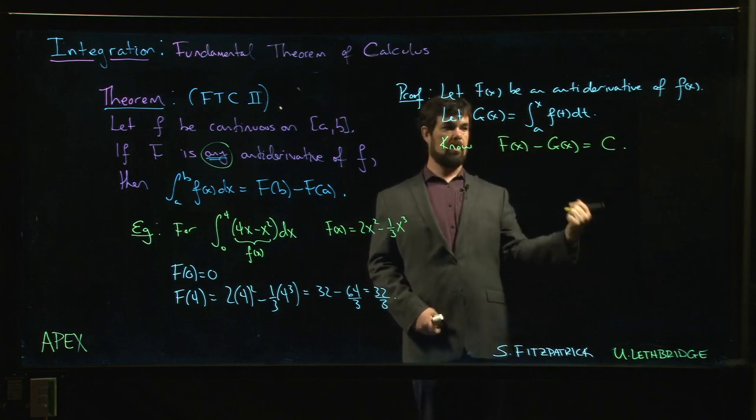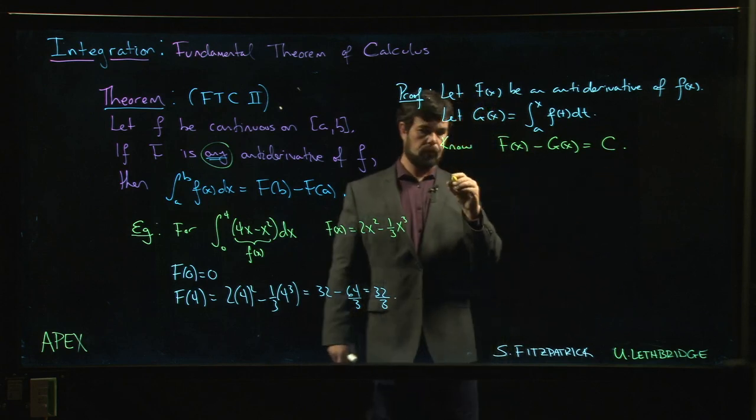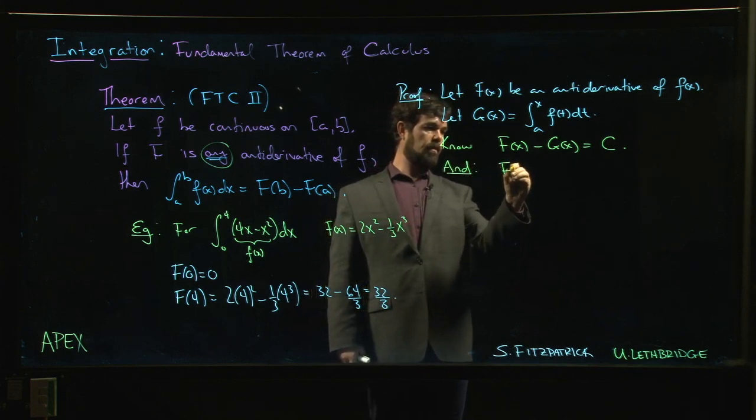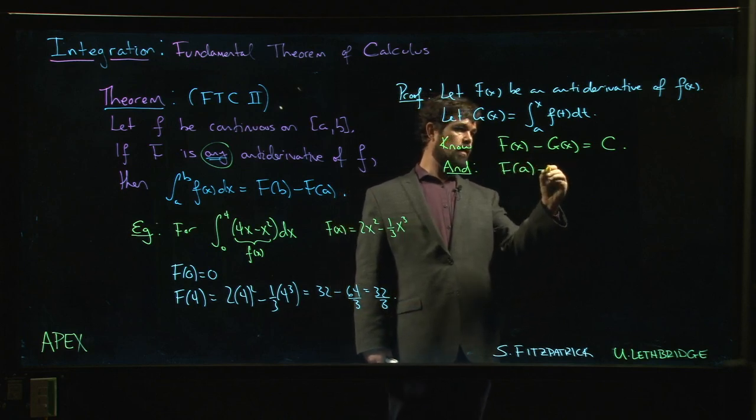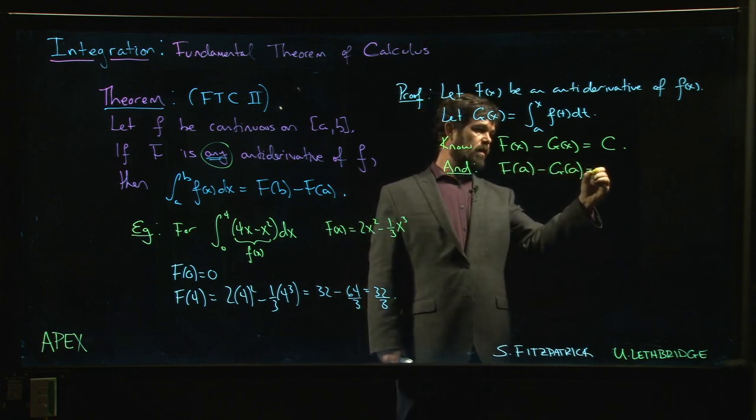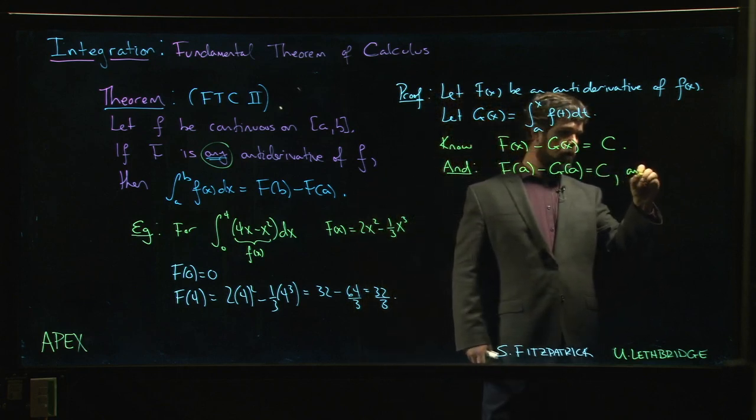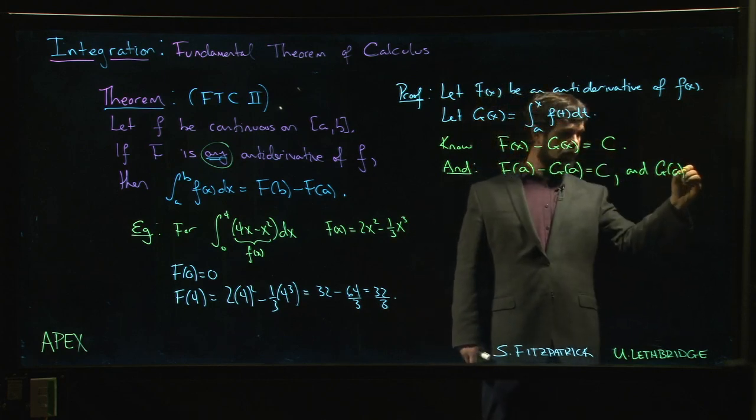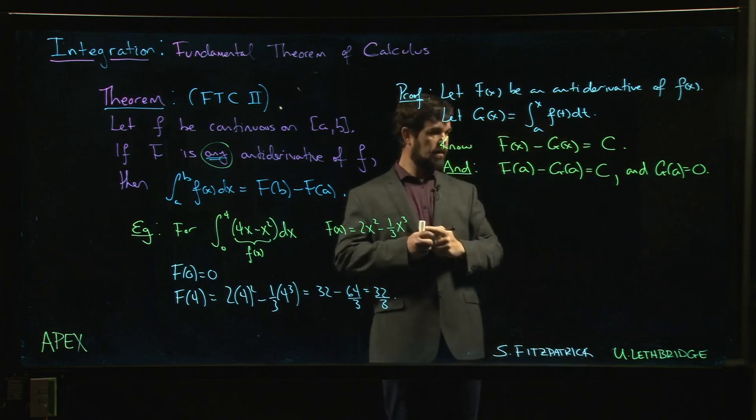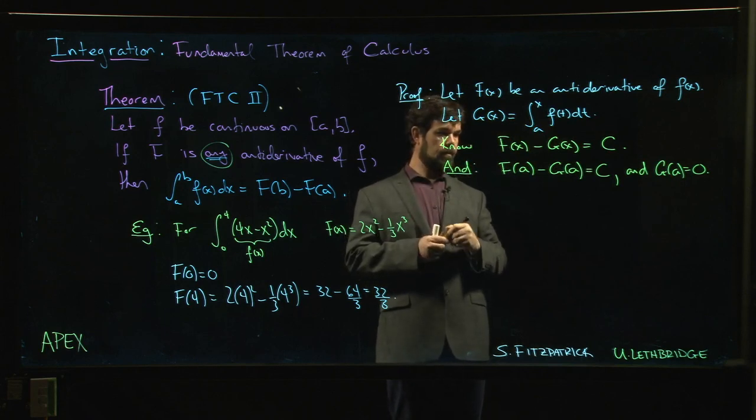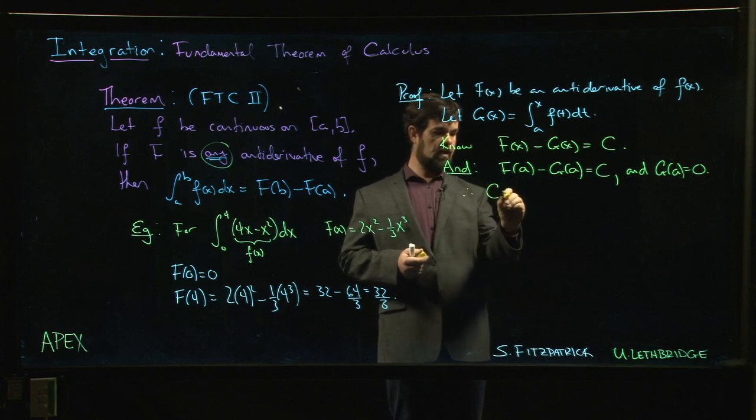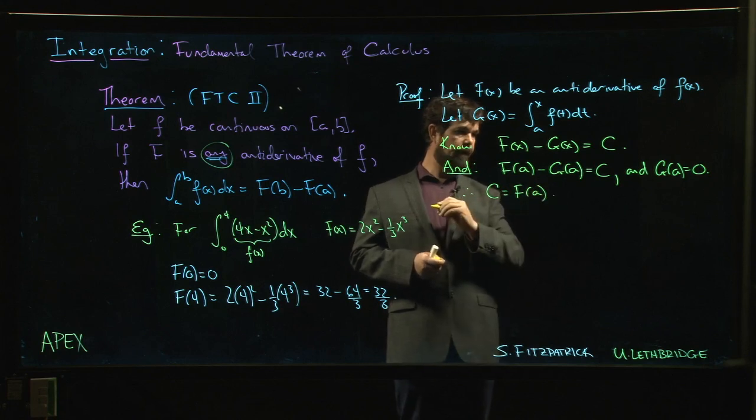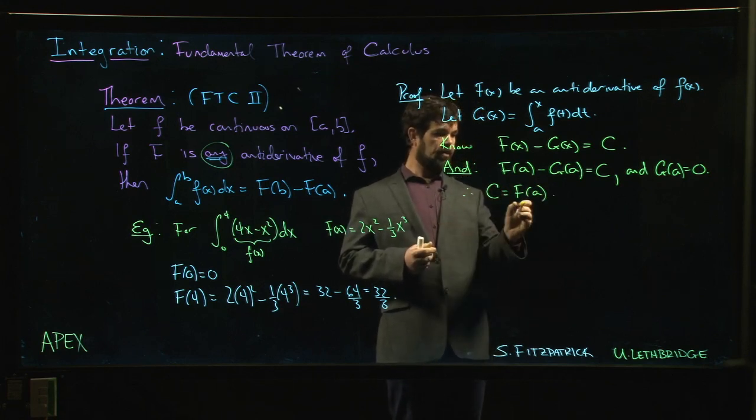F(x) is G(x) plus some constant. We also know F(a) minus G(a) equals C, and what's the value of G(a)? Zero. So that means that C is F(a).